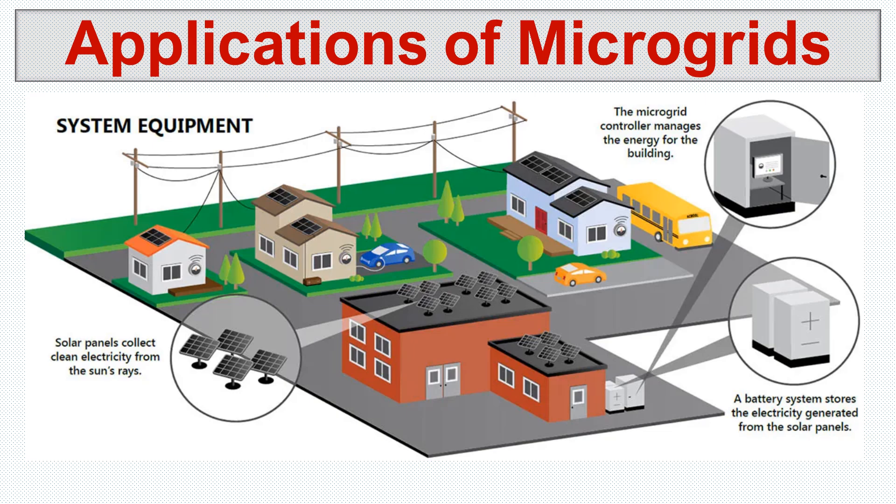Hello everyone, today we are going to discuss the applications of microgrids. Last week we studied about microgrids — the modern design or modern structure of the power system where we create local grids. Locally we generate power, for example, solar power generation which is locally produced, located on the roof of a house or commercial buildings.